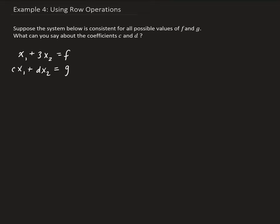Suppose the system below is consistent for all possible values of f and g. Based on that, what can we say about the coefficients c and d? To answer this question, we need to first put this linear system in matrix form, then do a row operation to put it in echelon form, and then do some analysis.